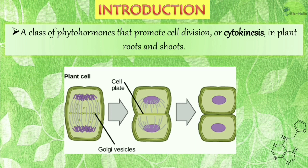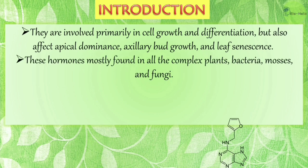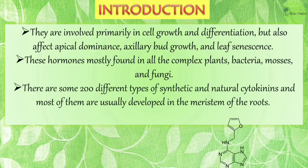Cytokinins are involved primarily in cell growth and differentiation, but they are also important for their effects on apical dominance, axillary bud growth, and leaf senescence. These hormones are mostly found in all complex plants, bacteria, mosses, and fungi. There are about 200 different types of synthetic and natural cytokinins, and most are usually developed in the mid-stem of the roots. They are slightly basic in nature.